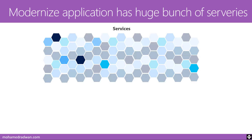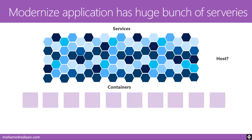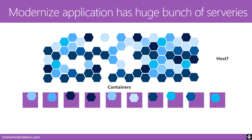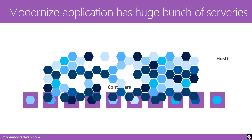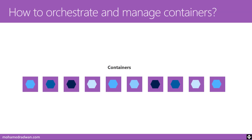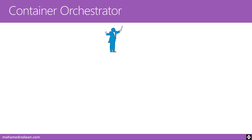In the previous lesson, we talked about the huge number of services based on microservices or modernized architecture, and how this may result in every service going into a container. So we end up with a huge number of services hosted in many containers. The question now is: how are we going to manage and orchestrate all these containers and our application?